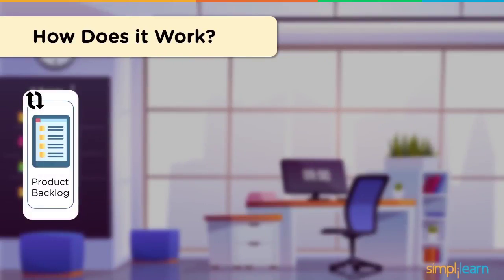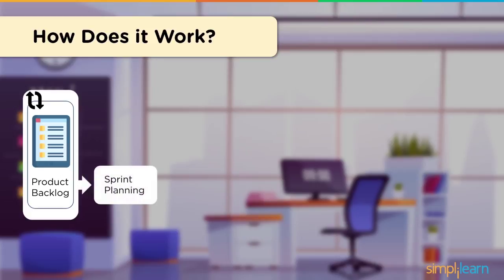The first component is the Product Backlog, which consists of a list of tasks that need to be completed so that the goals of the stakeholders are achieved. Then the team decides what tasks from the Product Backlog they want to take up and deliver in a 2–4 week period called a Sprint — hence the name Sprint Planning. Next, the tasks discussed in that phase are added to the Sprint Backlog, which is the set of tasks focused on in the ongoing Sprint.